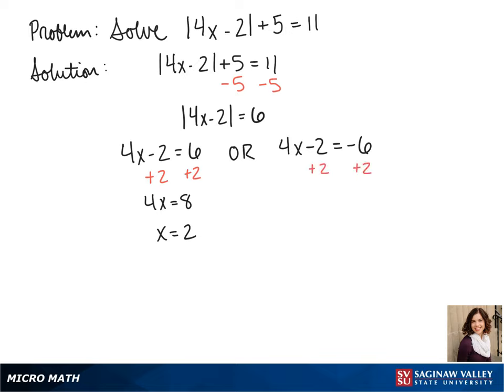Again, we add 2 to both sides. This time we get 4x equals negative 4. Then we divide both sides by 4, so our possible answers are x equals 2 or x equals negative 1.